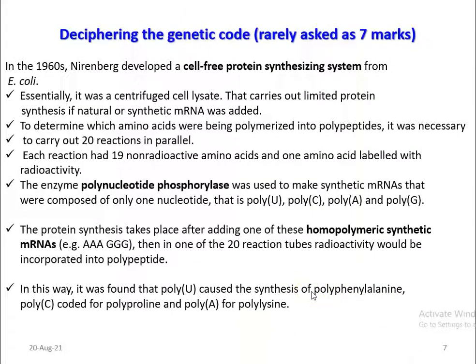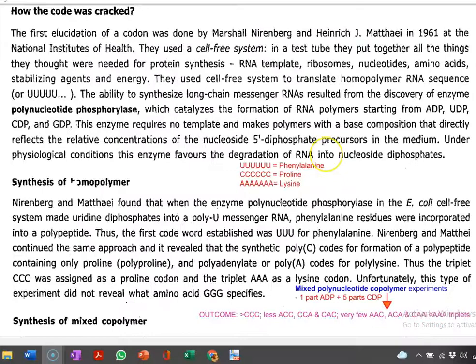The last part of this lecture is related to deciphering the genetic code — also asked as a 7 or 10-marks question in the semester examination. Deciphering the genetic code means finding out which code corresponds to which amino acid, that is, which triplet codes for which amino acid. A series of experiments were designed and conducted by various scientists. One important experiment was designed by Nirenberg in 1960, using a cell-free protein synthesizing system obtained from E. coli. The cell-free system consists of cell contents placed in a test tube with all materials required for protein synthesis.